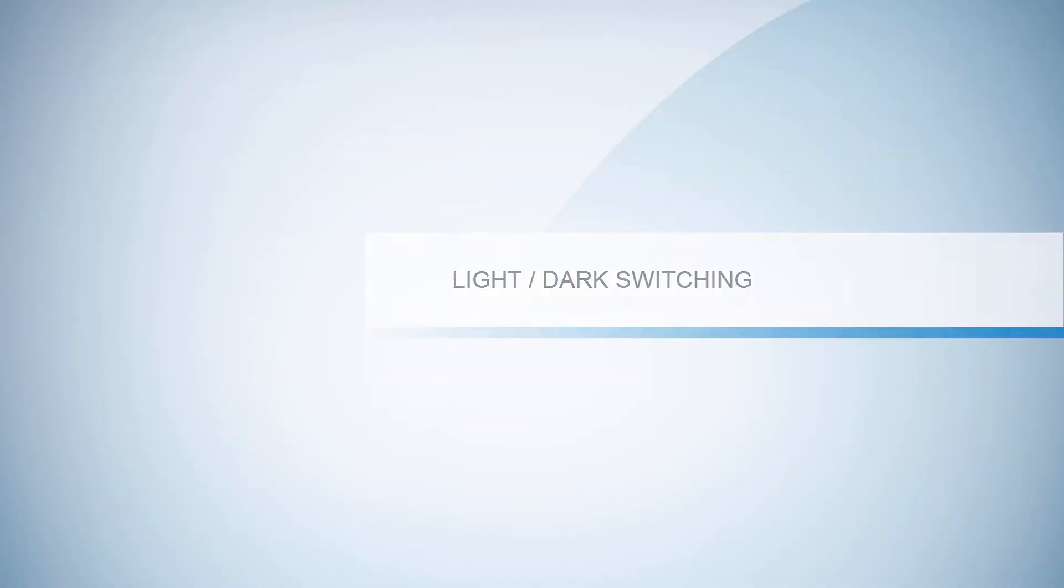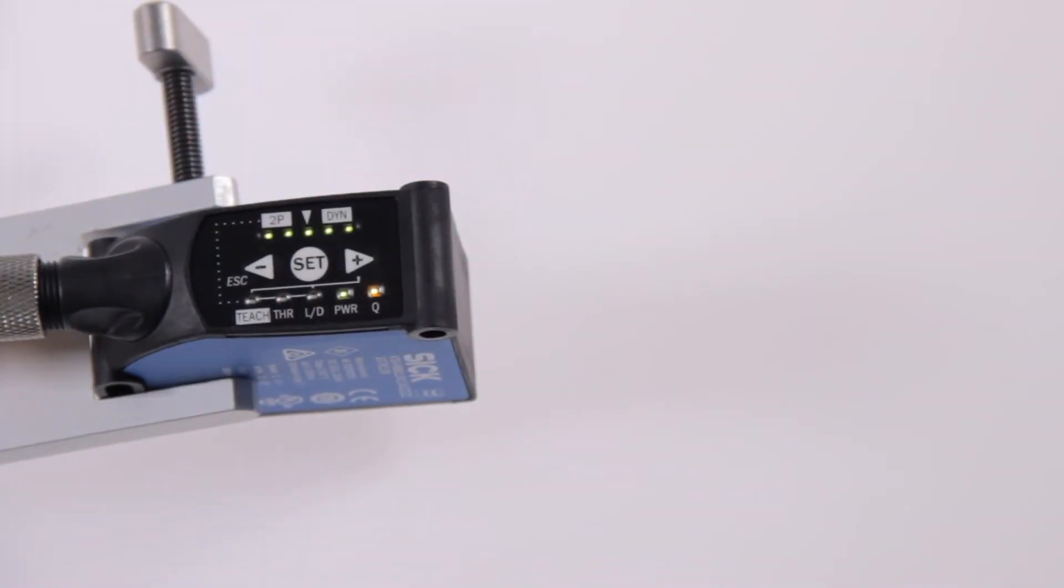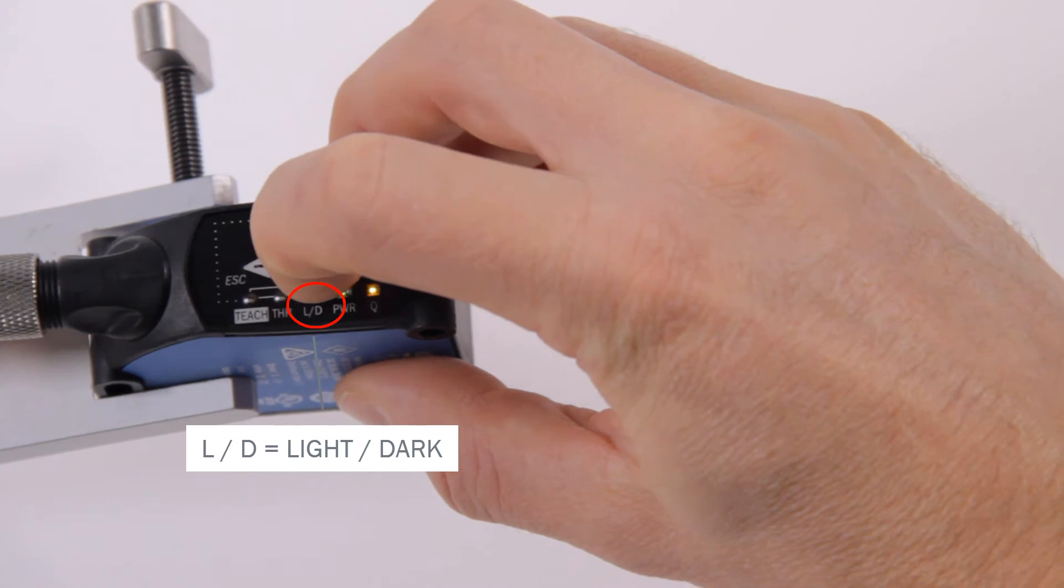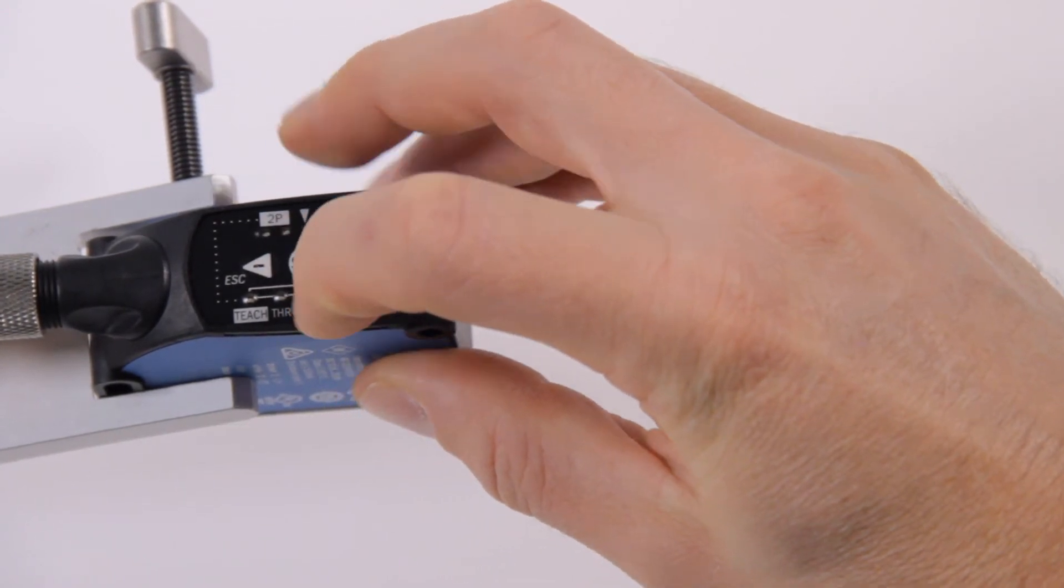Light dark switching. The light dark switching behavior or output logic of the sensor can be adjusted. Use the plus and minus buttons to get to the LD light dark menu item. Confirm with SET.